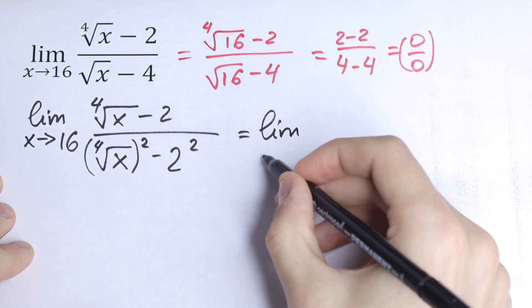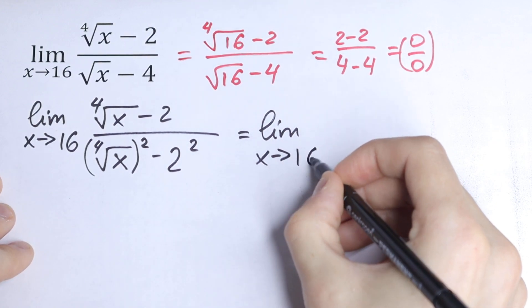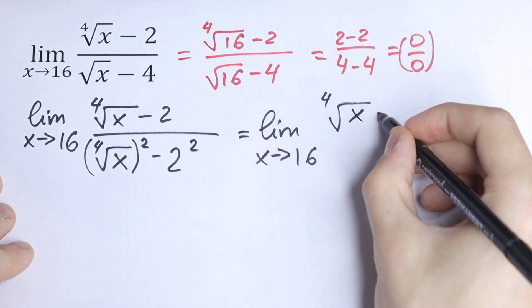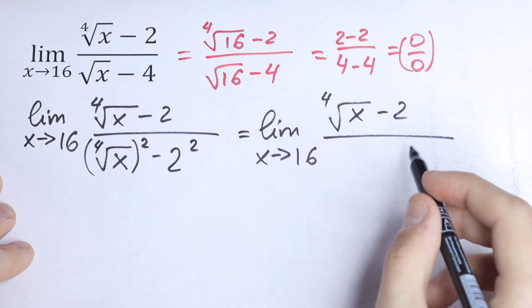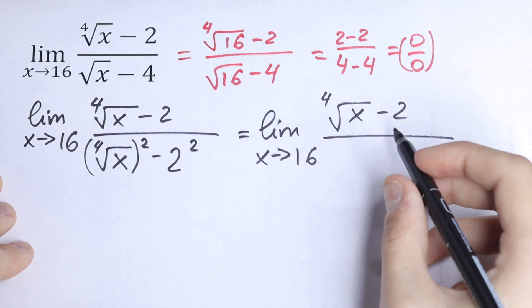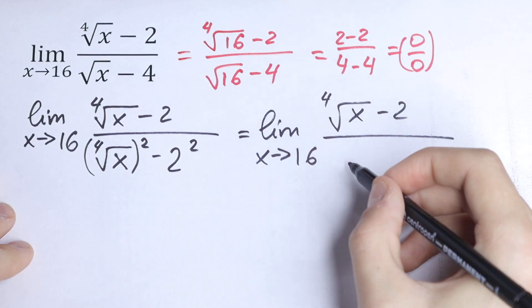We will have limit x approaches 16, this will be the same fourth root of x minus 2, and here we will have our conjugate. But we create this conjugate using the formula.